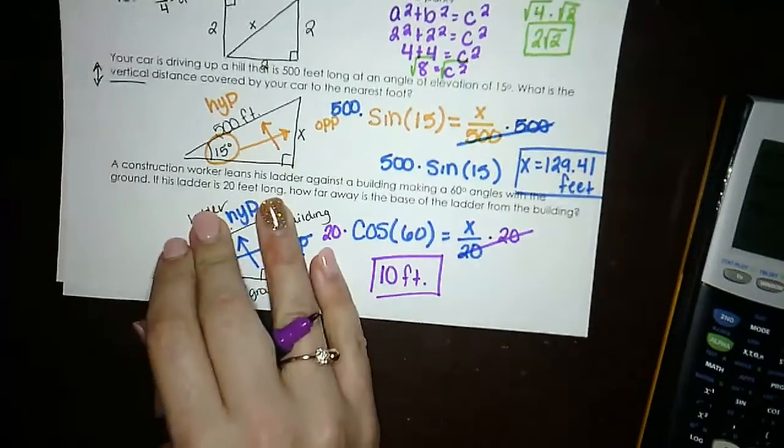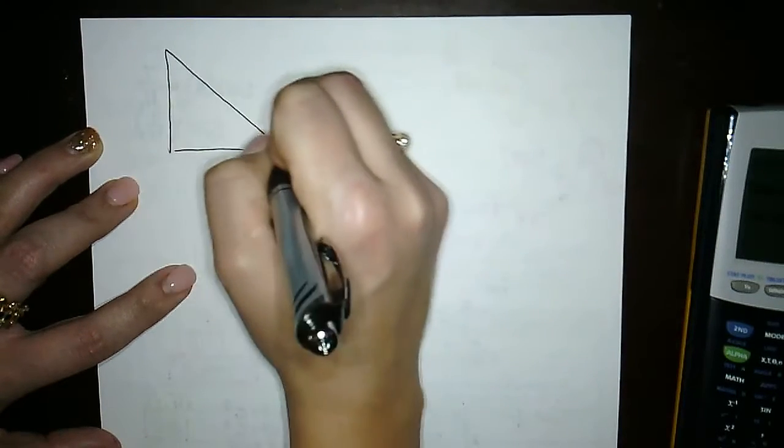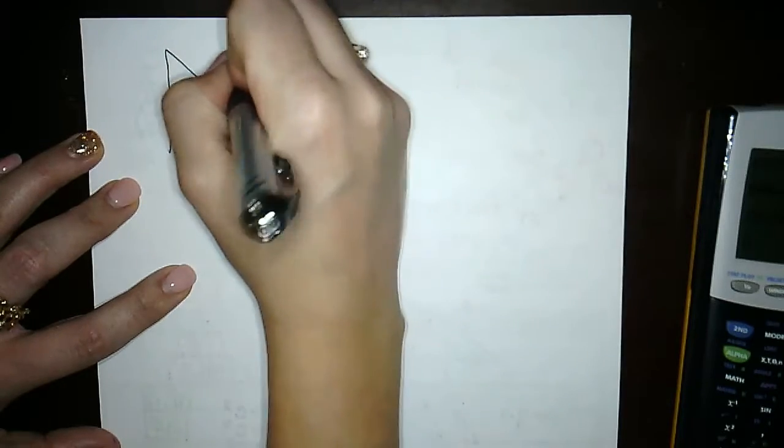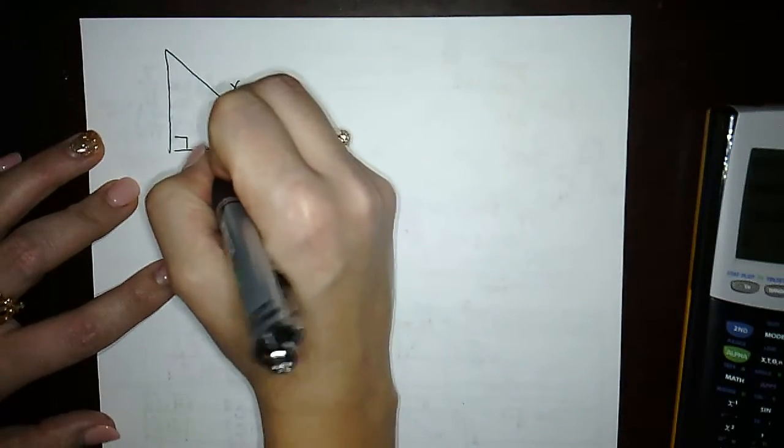I want to talk about one more case with you guys that might pop up on some of your practice. If I'm given a triangle, y'all can just draw this somewhere on your paper. They tell me this is 30 degrees. We're looking for the hypotenuse, and this is 10.